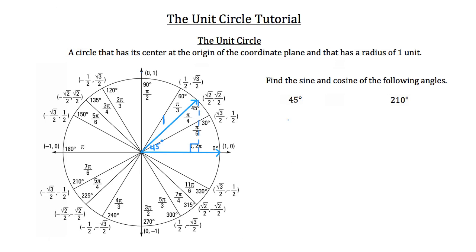When you're dealing with a 45-45-90 special right triangle — I'll draw a little example over here — the 90-degree angle is here, and the two remaining angles are 45 degrees each. The arbitrary values for the sides are x, x, and x times root 2.